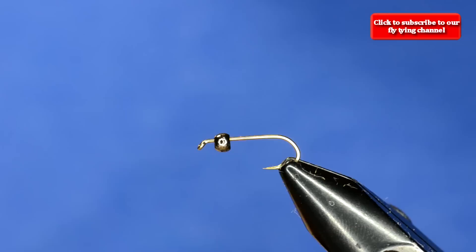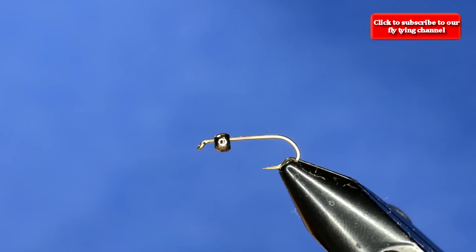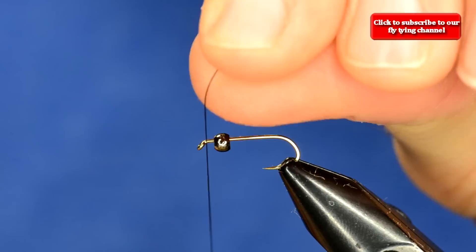They're strong, sharp, probably the sharpest nymph hook, and then a 2.8 millimeter tungsten bead. It could be black or black nickel. And then what I want to do is make sure that I leave some room at the head in front of the bead.